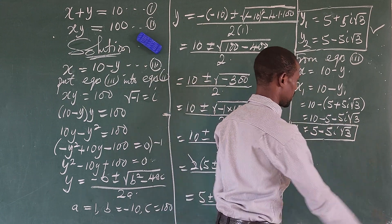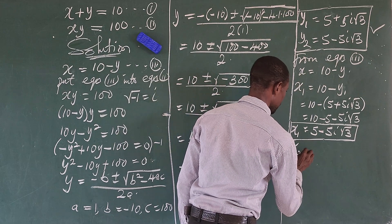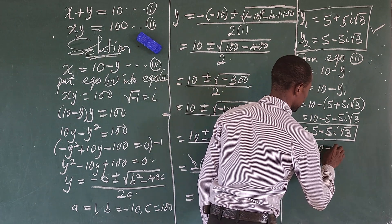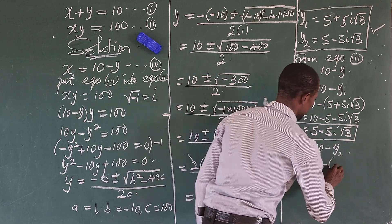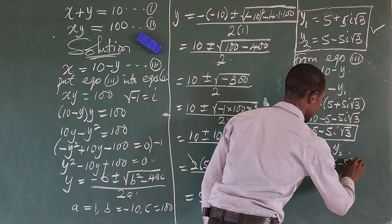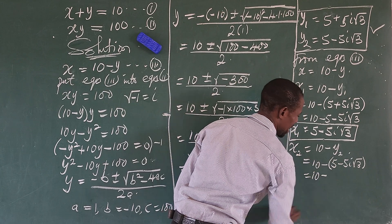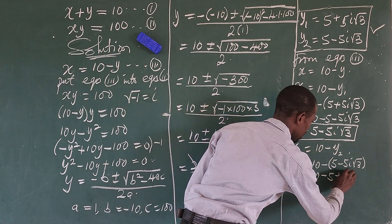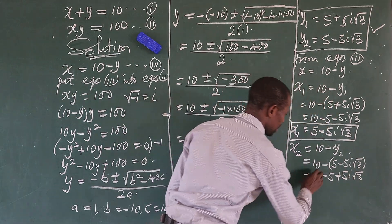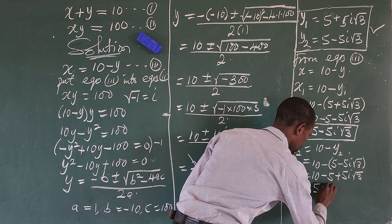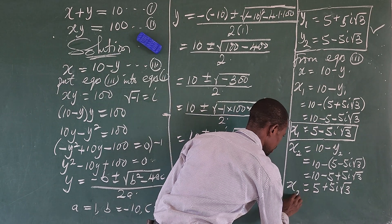For x2, we use x2 equals 10 minus y2, giving us 10 minus bracket 5 minus 5 iota root 3. Opening the bracket gives 10 minus 5 plus 5 iota root 3, which simplifies to x2 equals 5 plus 5 iota root 3.